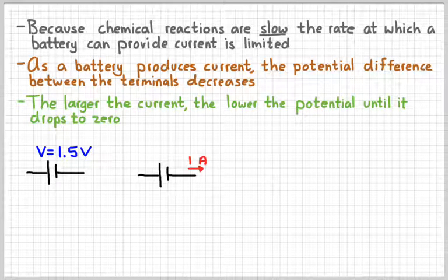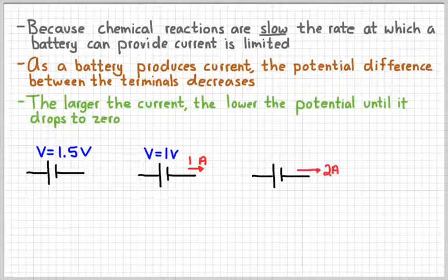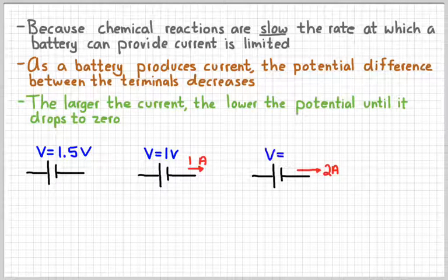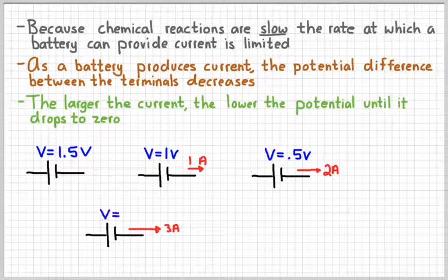Maybe if we draw an amp of current from it, the voltage drops to 1 volt. If we draw 2 amps of current from it, then maybe the voltage drops to half a volt. And then at some point, in this case 3 amps, the voltage would go all the way to zero. So this battery is not capable of providing more than 3 amps of current.